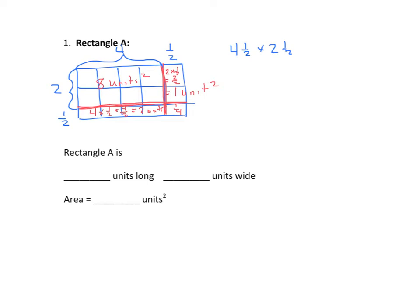Now we'll find the sum. So we have 8 plus 1 plus 2 plus 1 fourth. Find the sum of the whole numbers. We have 11 and 1 fourth. So now we enter our information for rectangle A. We have 4 and 1 half units long, 2 and 1 half units wide, and the total area is 11 and 1 fourth units squared.